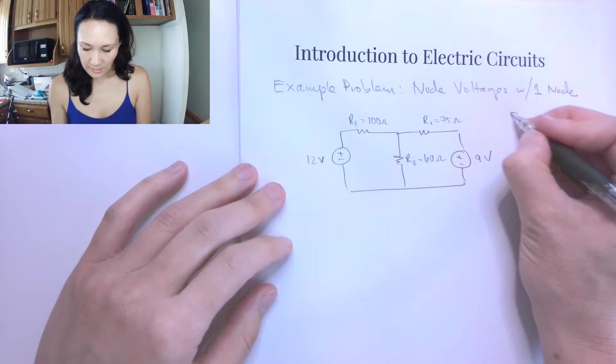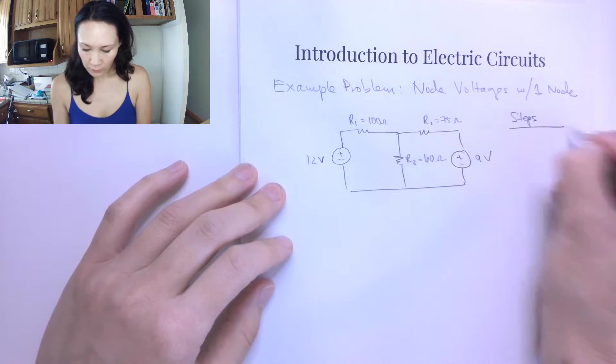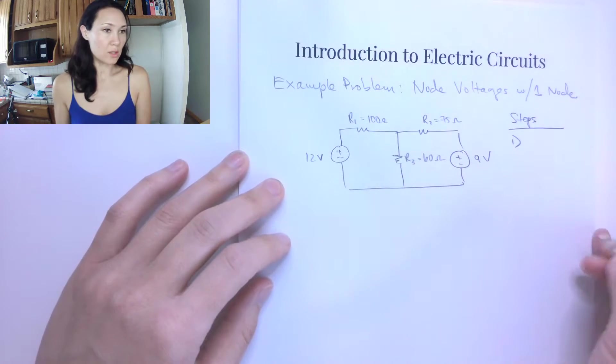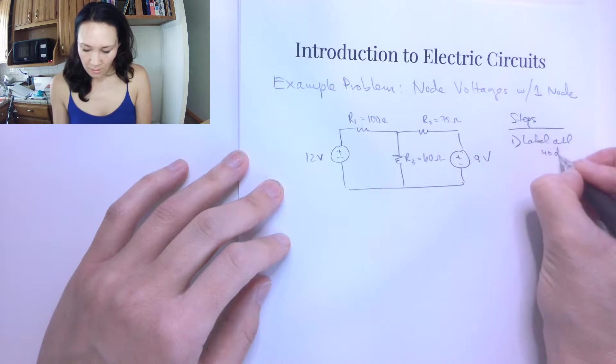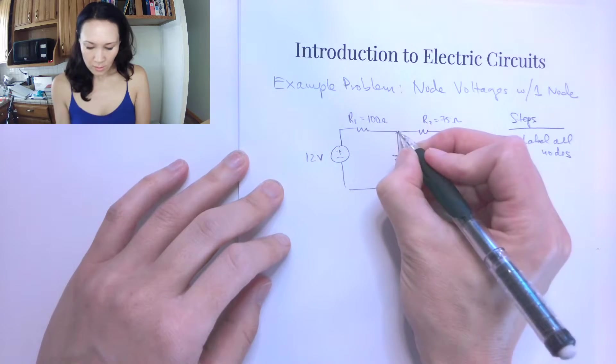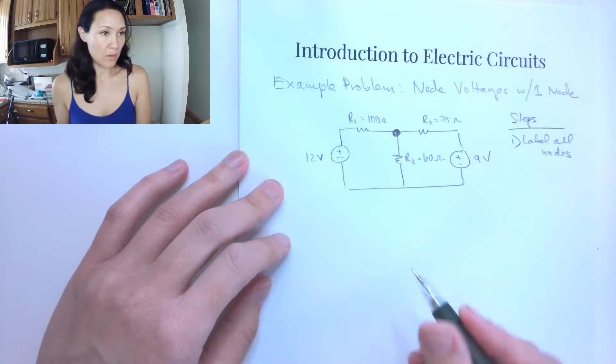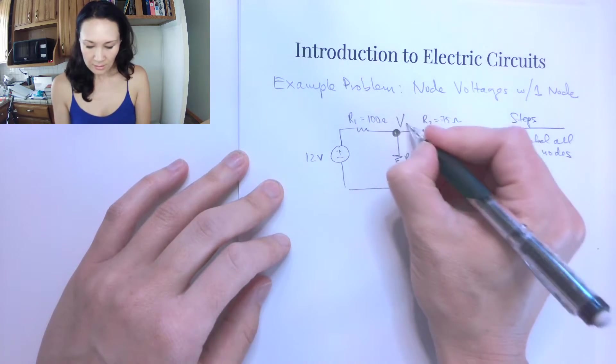Let's follow the steps for the node voltage method. The first thing we want to do is label all nodes. This circuit only has one node and it's in between all the resistors right here. So I'm going to go ahead and label this V1.